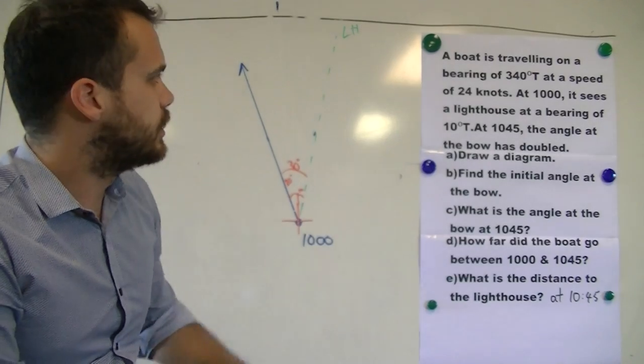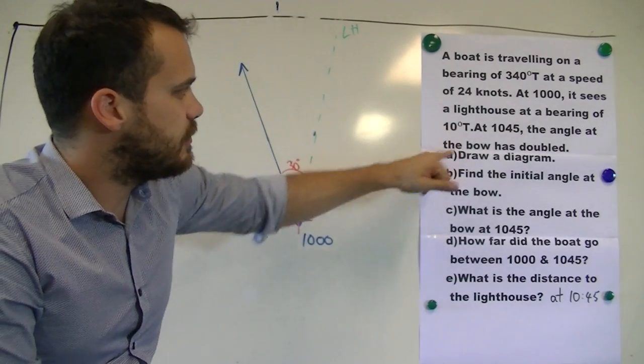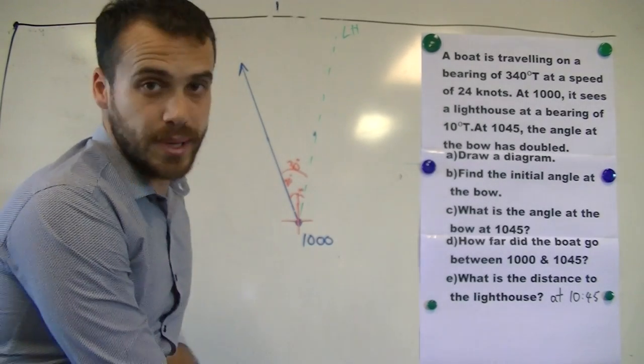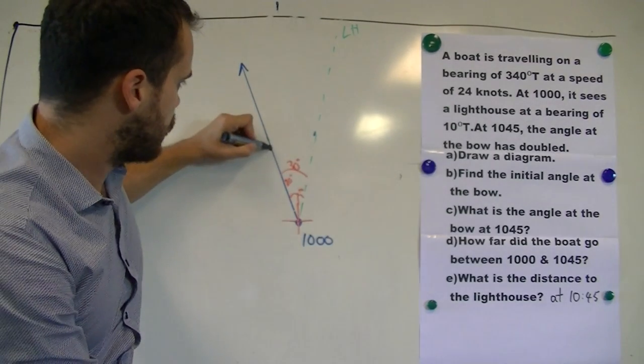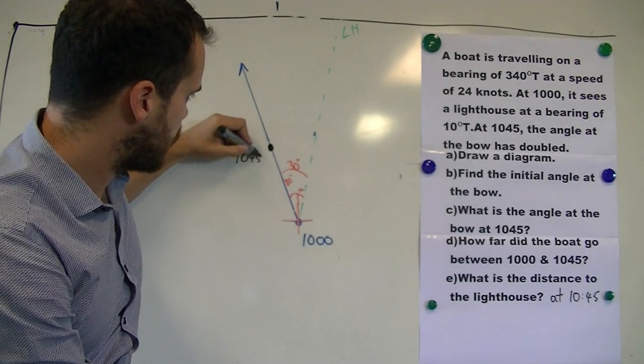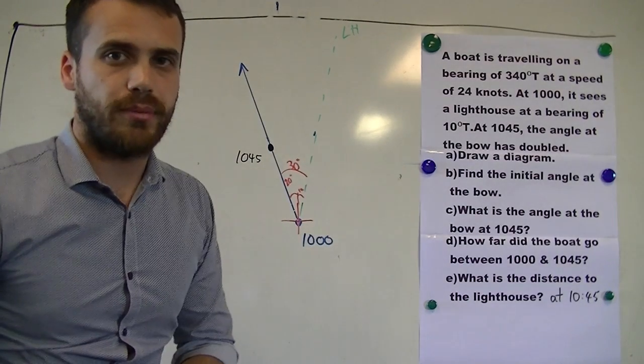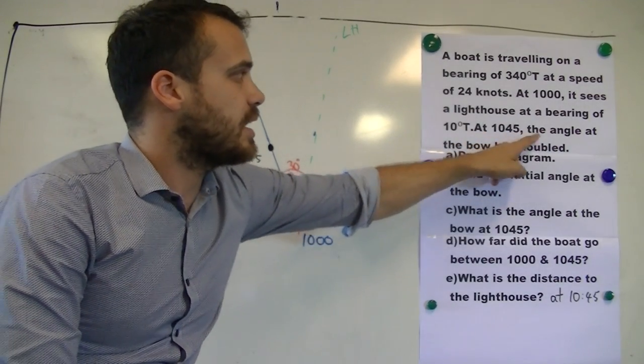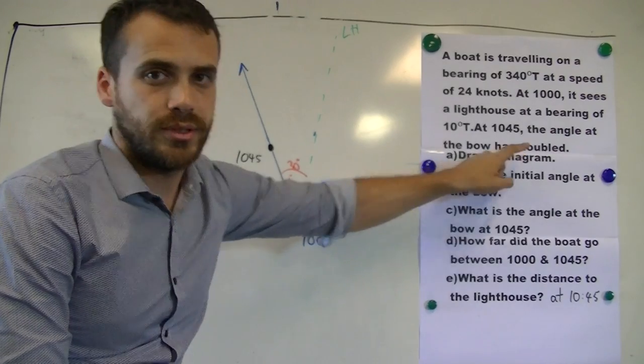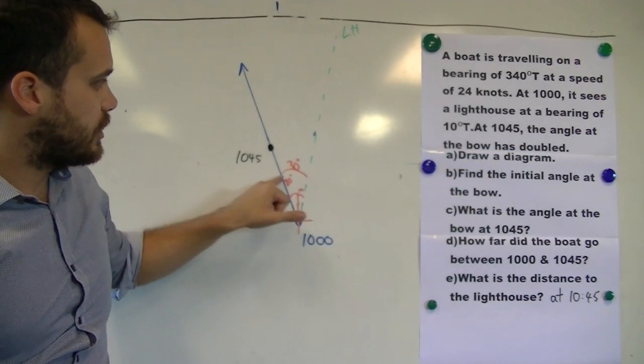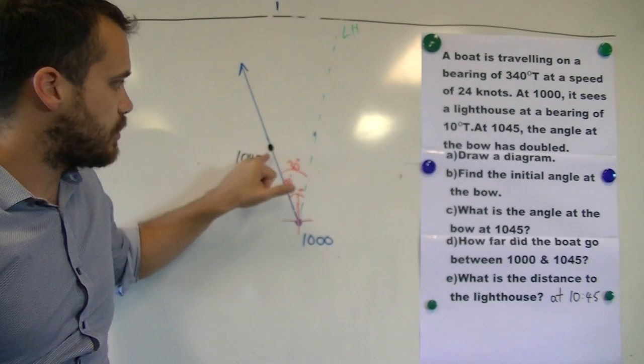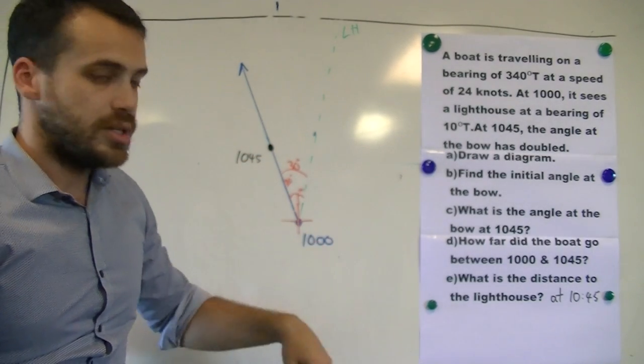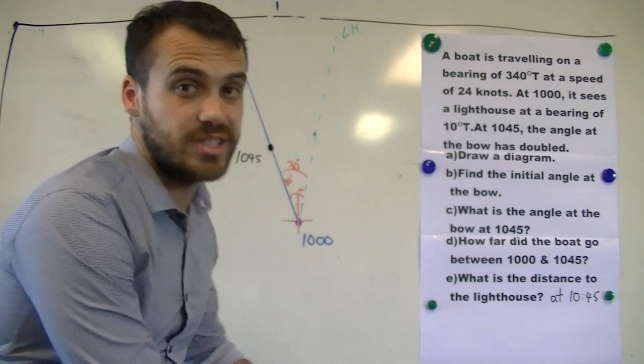Let's continue drawing our diagram. Now at 10:45, our boat's moved further along this blue line. I'm just going to pick a spot. At 10:45, our boat's moved along that line. And it says at 10:45, the angle at the bow has doubled. So initially, our angle at the bow was 30 degrees. That means that when we get to here, our angle at the bow will have doubled. So our angle at the bow will be double 30, which is 60.